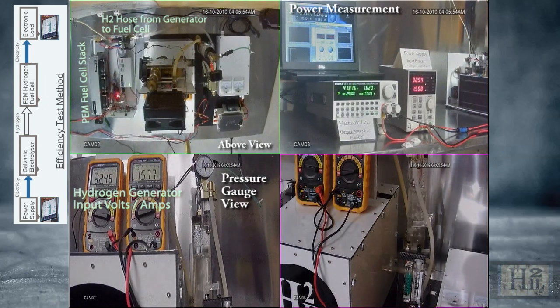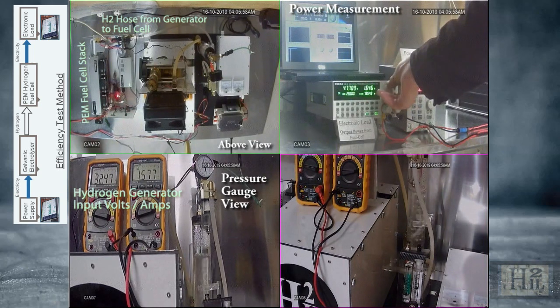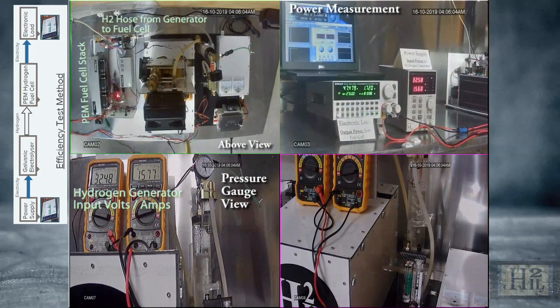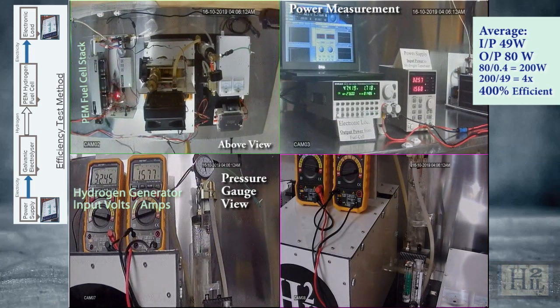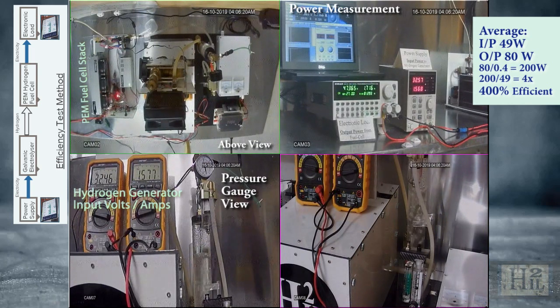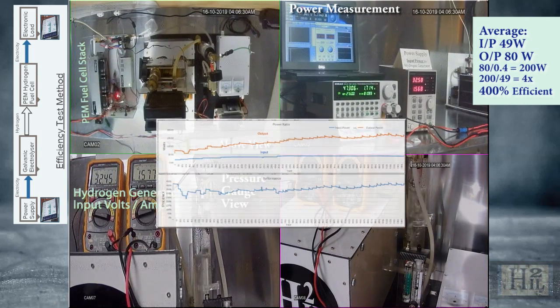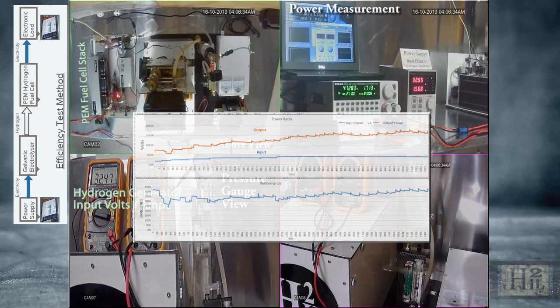Yes, the fuel cell used to convert hydrogen back into electricity is only 40% efficient. Therefore, divide the output 80 watts by 0.4 which equates to 200 watts of usable hydrogen energy for the 49 watts of input electrical energy. That's an energy gain of 400%.